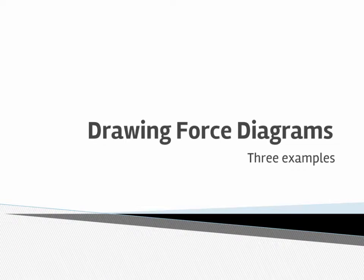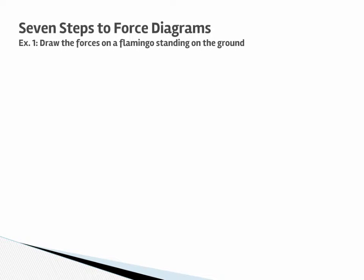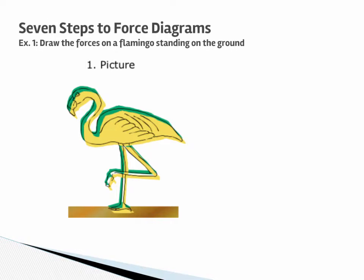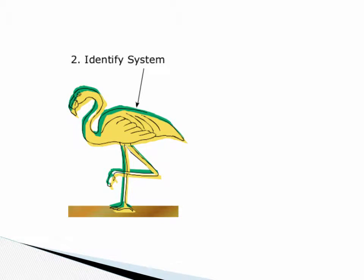So drawing force diagrams, here are three examples. One, draw the forces of a flamingo standing on the ground. Here's a picture of a flamingo standing on the ground. Identify the system. It's a flamingo standing on the ground.